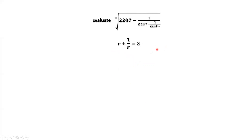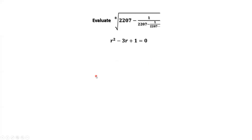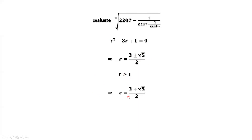Multiplying both sides by r, we have r squared minus 3r plus 1 equals 0, after simplification. Solving this equation using the quadratic formula, we have r equals 3 plus or minus square root of 5, over 2. Because r is bigger than or equal to 1, we only have one solution for r, which is 3 plus square root of 5, over 2.